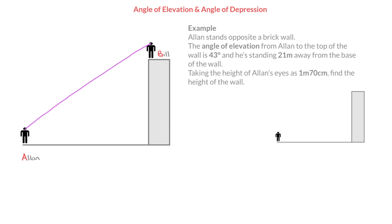I'll draw a horizontal line leaving Alan's eyes, and I'll do the same from Bill's eyes. We speak of an angle of elevation as soon as we have to look upwards to see something. In this example, Alan has to look upwards along the line of sight to see Bill. So we define the angle of elevation as the angle between the line of sight and the horizontal — that angle there — which I'll label angle of elevation.